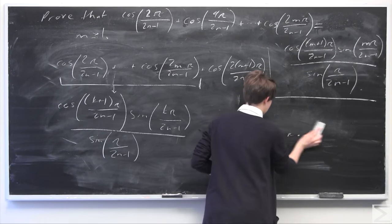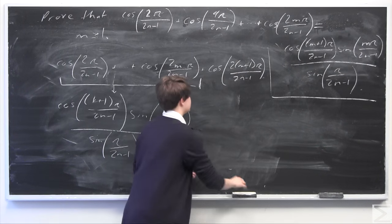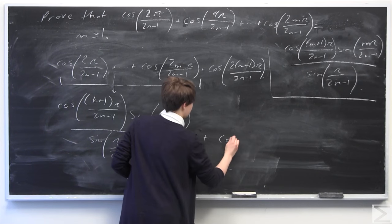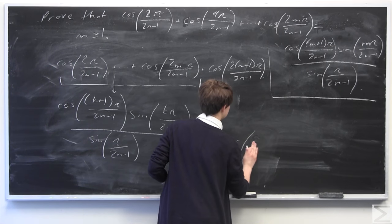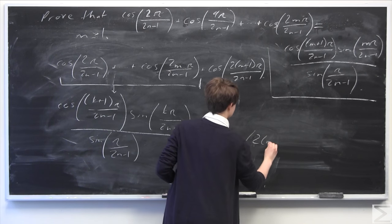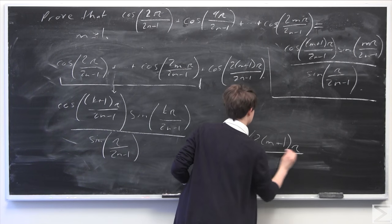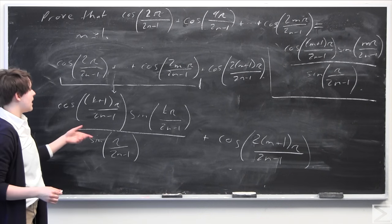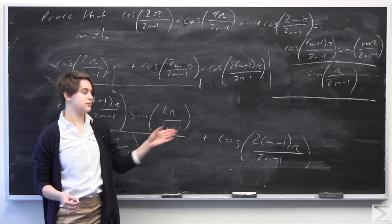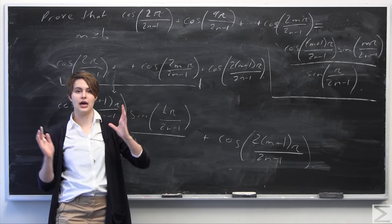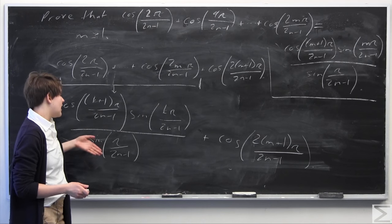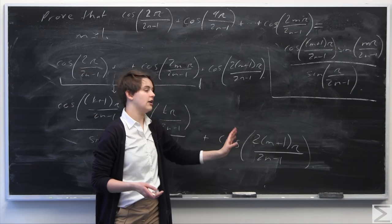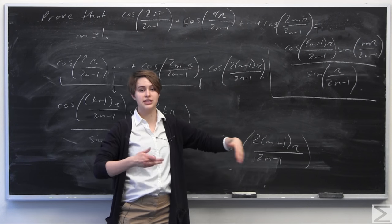We can't forget the straggler term on the end — the n plus 1th term — which is cosine of 2 times k plus 1 times pi over 2n minus 1, added on to all of this. Now I'm going to combine both of these fractions into one by getting a common denominator, which is sine of pi over 2n minus 1. So I'm going to multiply and divide the cosine term by sine of pi over 2n minus 1.